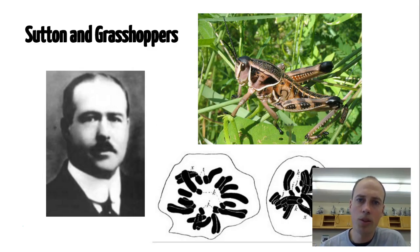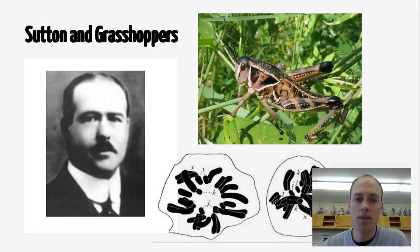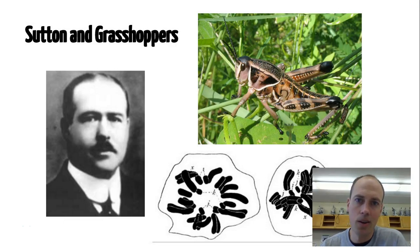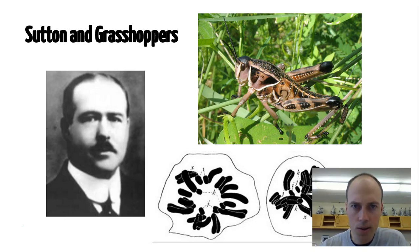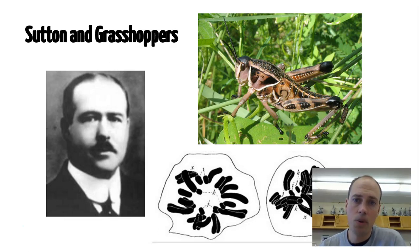We're going to start with a guy named Walter Sutton. He's actually an American geneticist back in 1903. He's working on grasshoppers. That's not that long ago — I have great-grandparents that were alive during this time. So 112 years ago, Walter Sutton is studying grasshoppers.